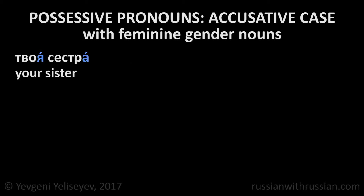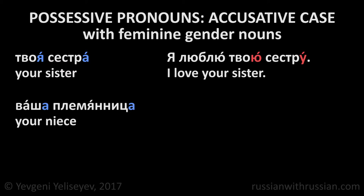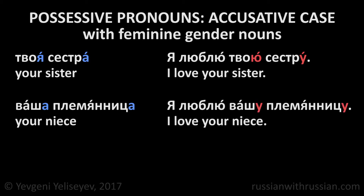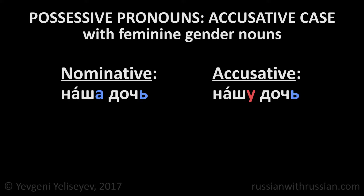For example: твоя сестра – your sister. Я люблю твою сестру – I love your sister. Я люблю вашу племянницу – I love your niece. Наша дочь – our daughter. Я люблю нашу дочь – I love our daughter. As you remember, feminine nouns with endings different from А or Я don't change their form in the accusative case: наша дочь → нашу дочь.